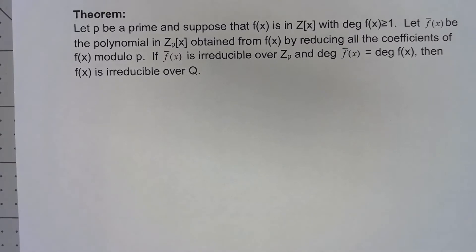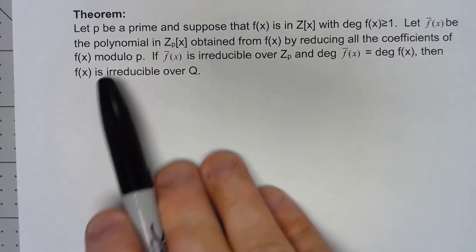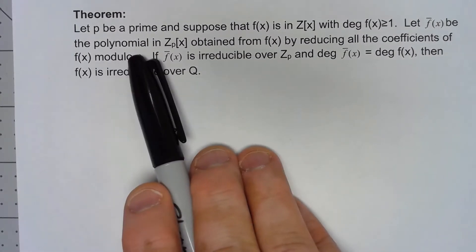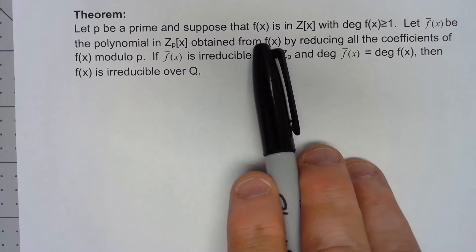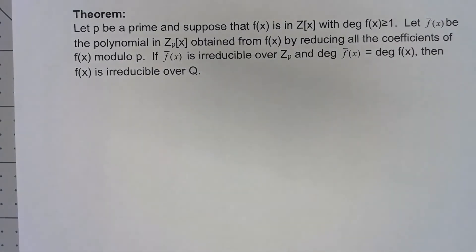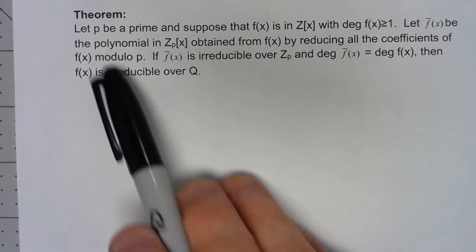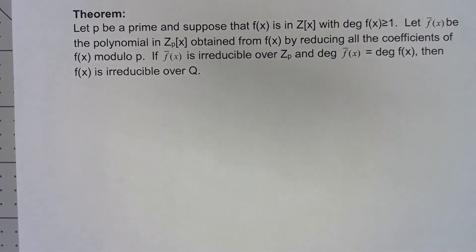We have a few things about irreducibility by now, but this one ends up being very important. Let's suppose we have a prime and we've got a polynomial with integer coefficients, degree greater than or equal to one. What we're going to do is take the coefficients of that polynomial and reduce them modulo the prime that we pick.